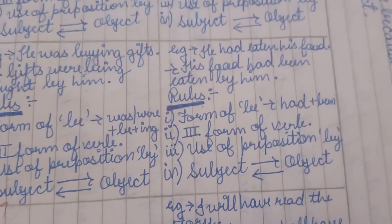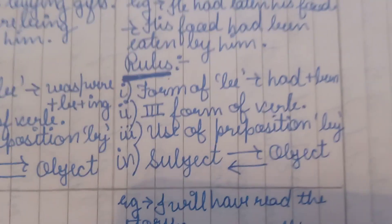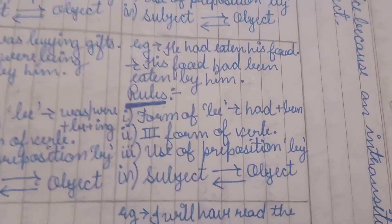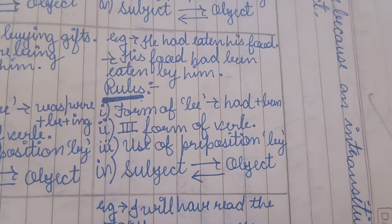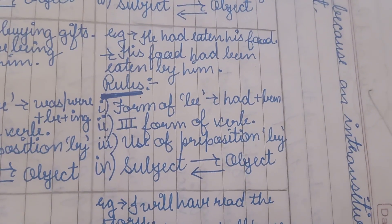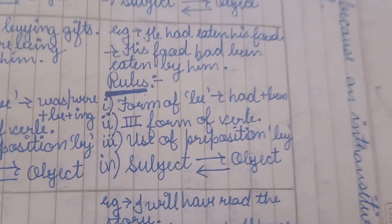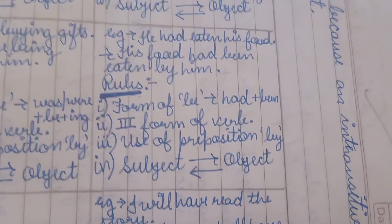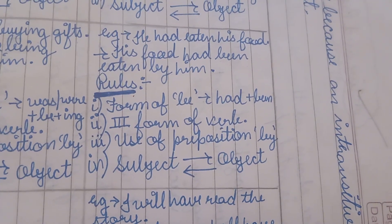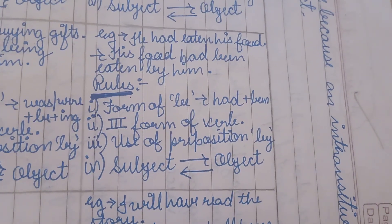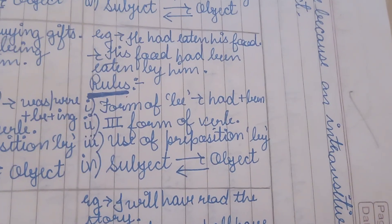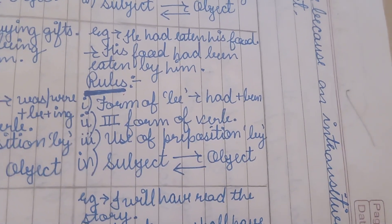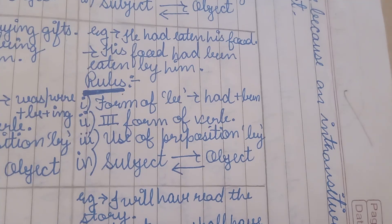Moving on to Past Perfect tense, the example is: 'He had eaten his food.' Changing it to passive: 'His food had been eaten by him.' The form of 'be' used here is 'had' plus 'been.' The remaining three rules stay the same — third form of verb 'eaten,' use of preposition 'by,' and 'he' coming to object position and becoming 'him.'